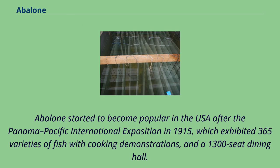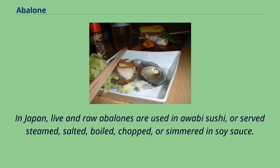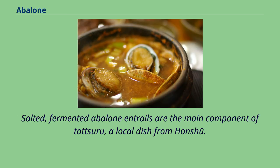Abalone started to become popular in the USA after the Panama-Pacific International Exposition in 1915, which exhibited 365 varieties of fish with cooking demonstrations and a 1,300-seat dining hall. In Japan, live raw abalones are used in awabi sushi, or served steamed, salted, boiled, chopped, or simmered in soy sauce. Salted, fermented abalone entrails are the main component of tatsuru, a local dish from Honshu.